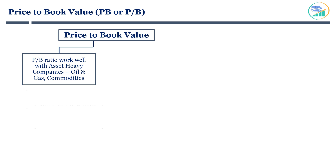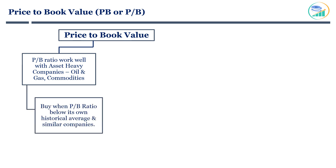The stock is a buy when the PB ratio is trading below its own historical average, and moreover, it's trading at a lower multiple compared to competitors with similar size and business model.